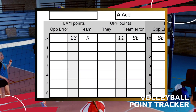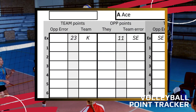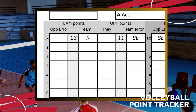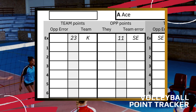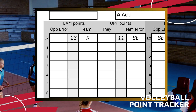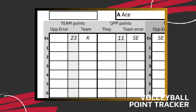Each set of columns represents a set. Your team's points will be documented in the left three columns and your opponent's points in the right three columns. The numbers to the side of the set of columns represent the point for that set.